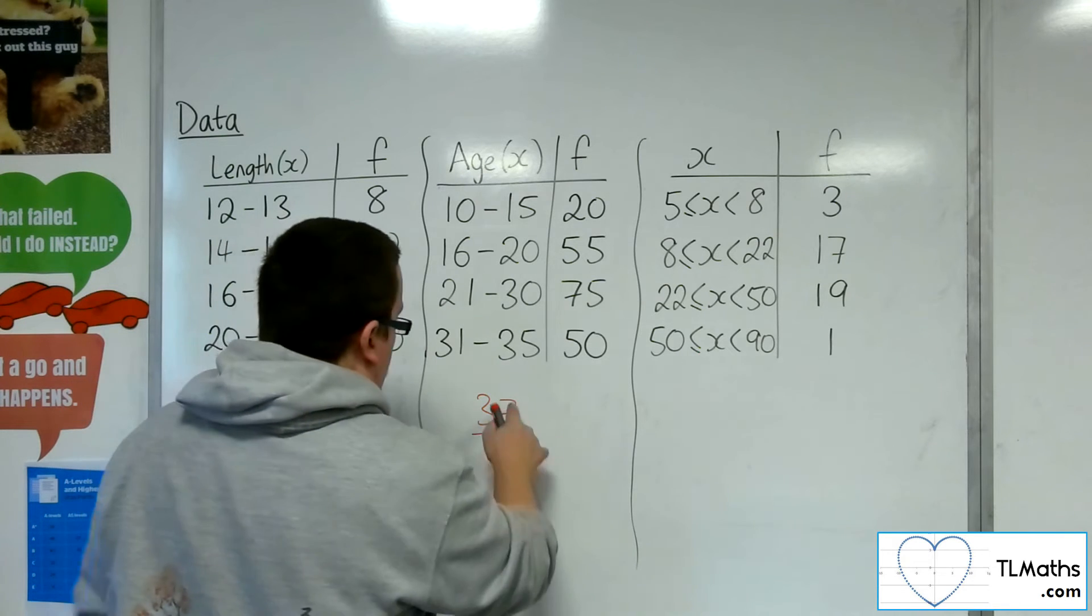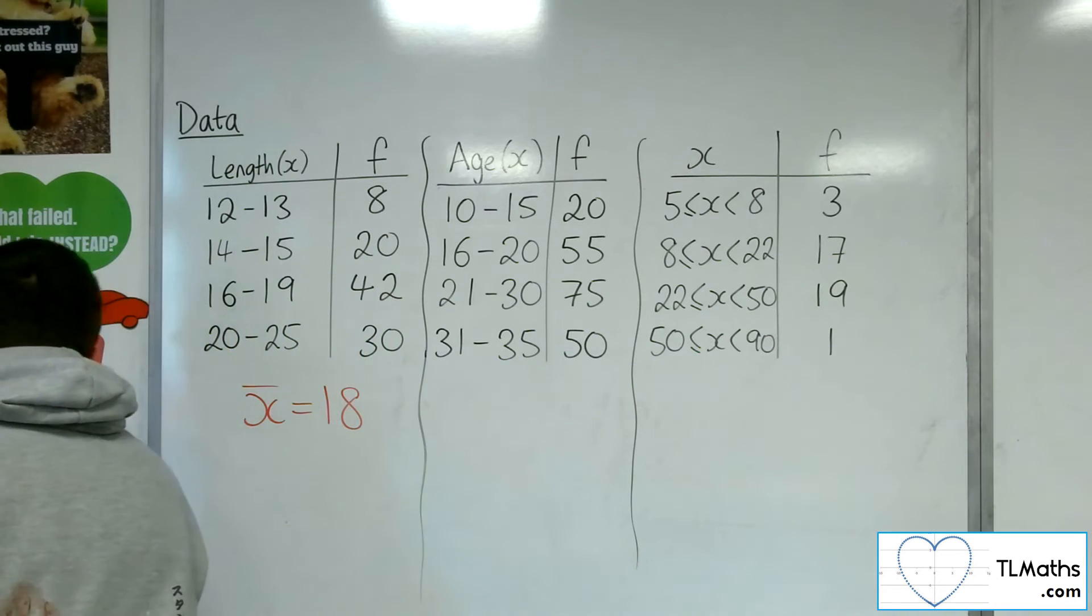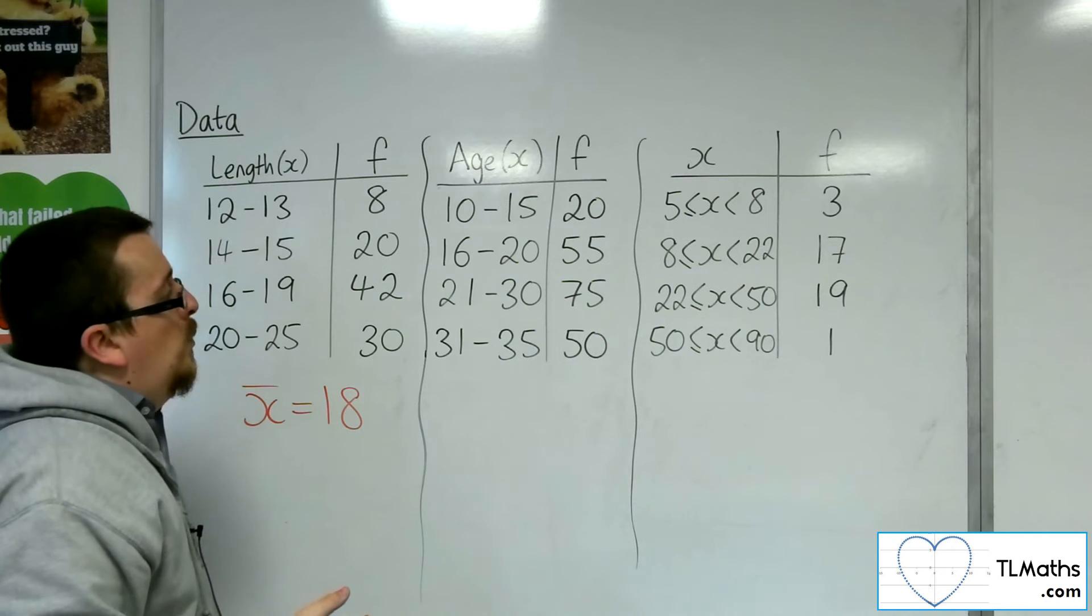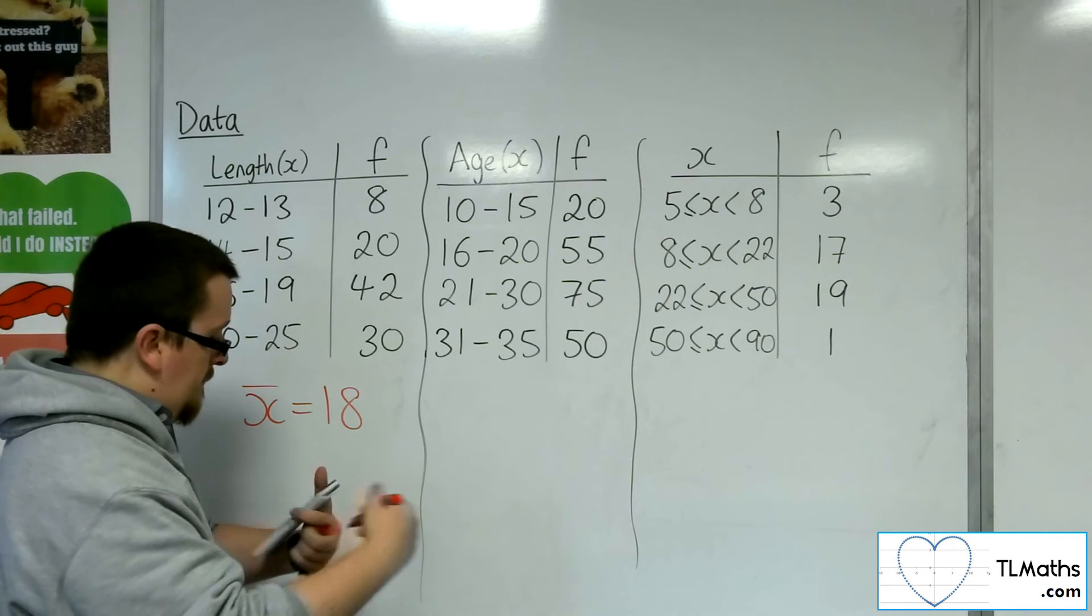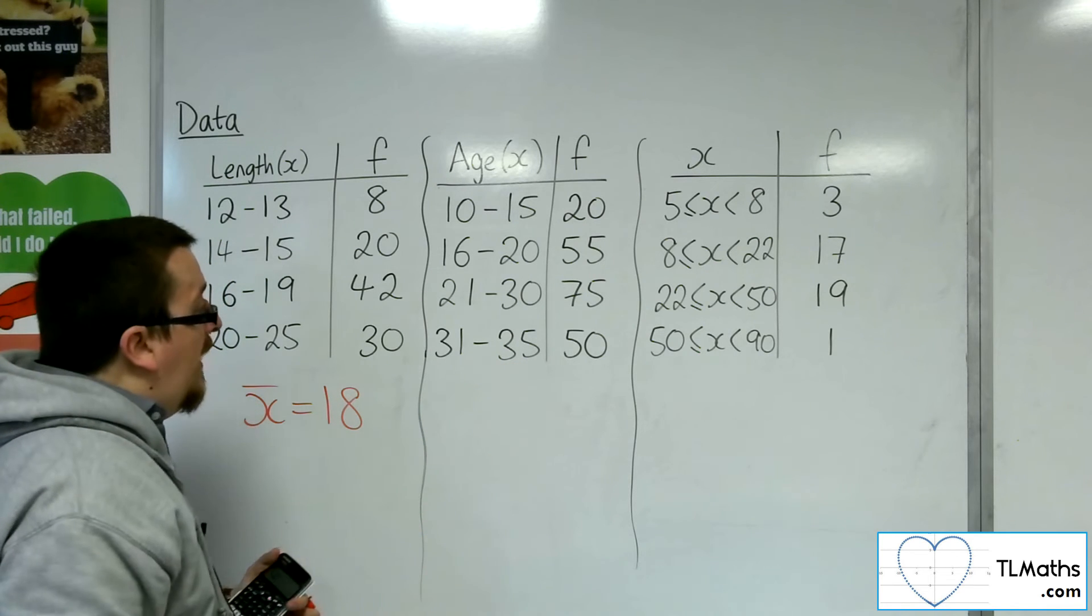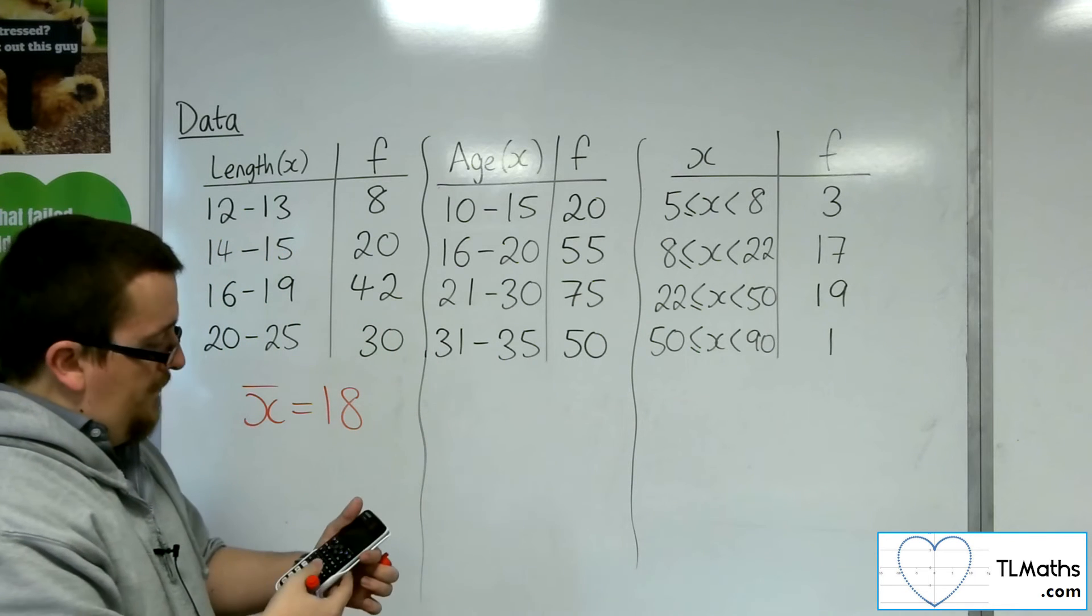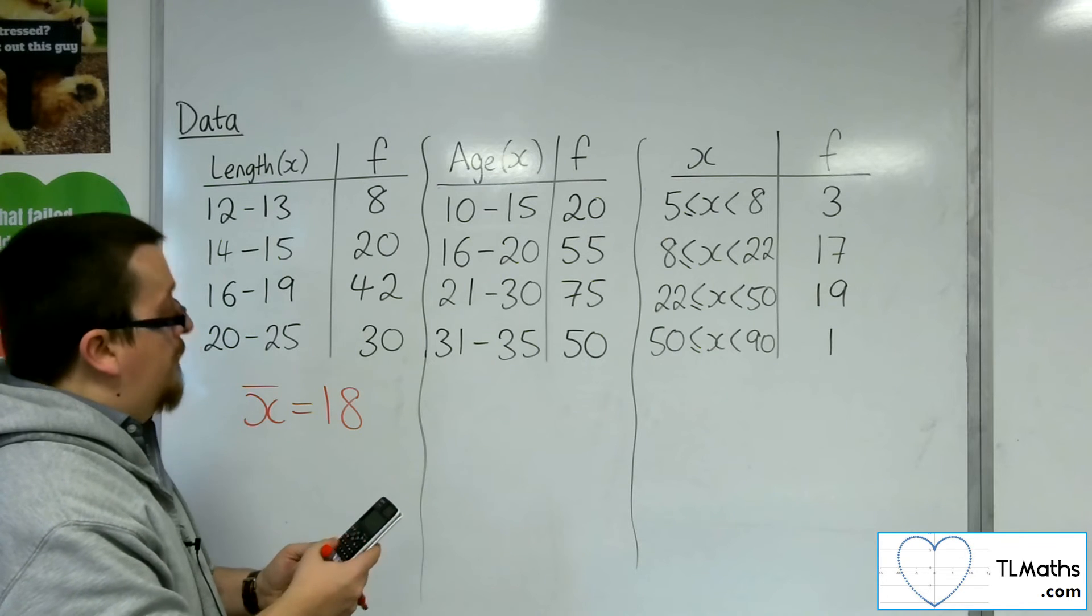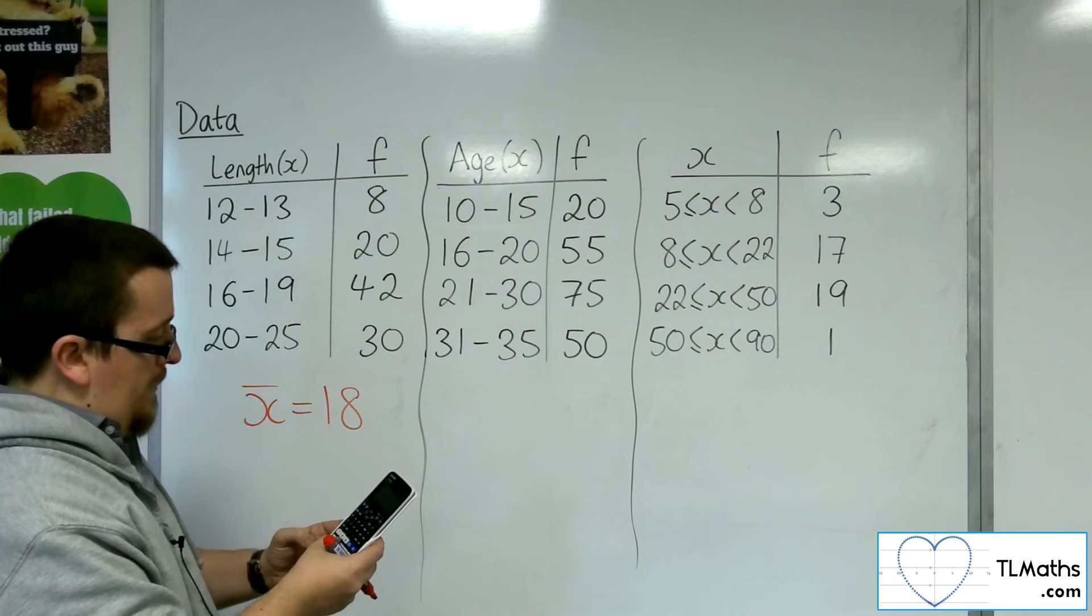Never be worried about doing a little calculation on the side if you can't quite do it in your head. Then 21 to 31, well 21 and 31 is 52, half of that is 26. And then 31 and 36 is 67, so that's 33 and a half. And then add in the frequencies, 20, 55, 75 and 50.